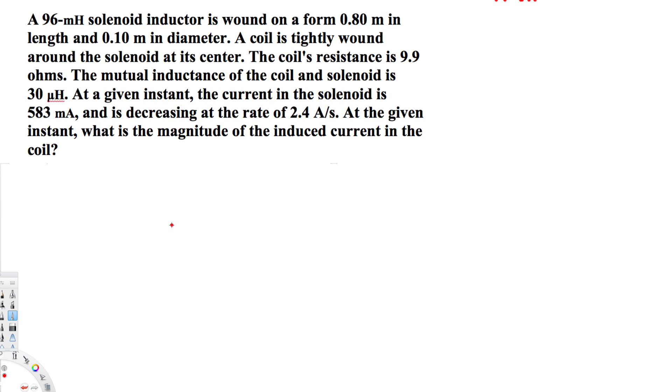30 microhenries. At a given instant, the current in the solenoid is 583 milliampere and is decreasing at the rate of 2.4 amperes per second. At the given instant, what is the magnitude of the induced current in the coil?